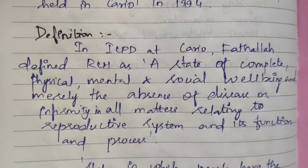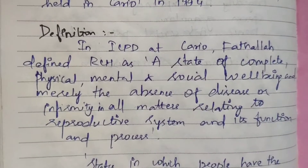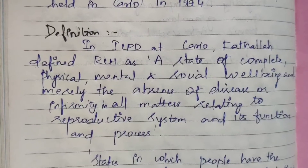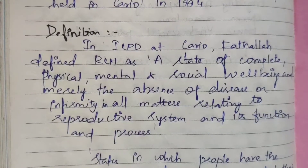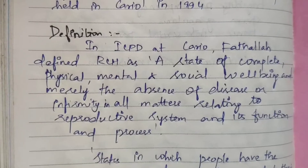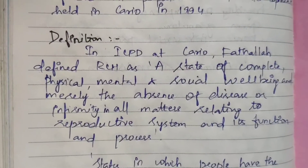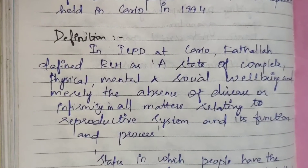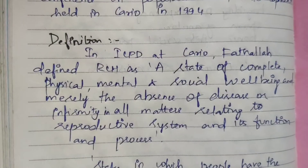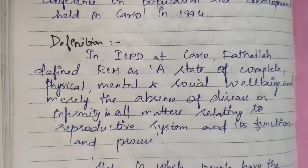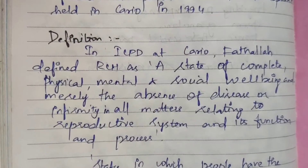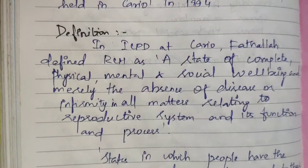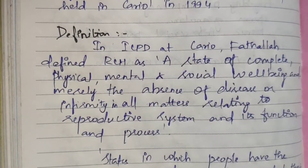The definition from ICPD at Cairo: RCH is defined as a state of complete physical, mental and social well-being, not merely the absence of disease or infirmity, in all matters relating to the reproductive system and its functions and processes. This is similar to the general health definition, with focus on the reproductive period.